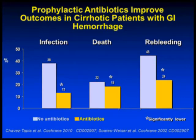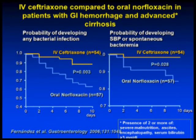What antibiotic should you use? The theory is selective intestinal decontamination using a poorly absorbed antibiotic by mouth, like norfloxacin. For many years we recommended oral norfloxacin — even though the patient is bleeding, it still worked. But then a study came out comparing IV ceftriaxone versus oral norfloxacin. Note that this study looked at patients with not only GI hemorrhage but advanced risk — almost Child C patients with two or more of: malnutrition, ascites, encephalopathy, and jaundice.